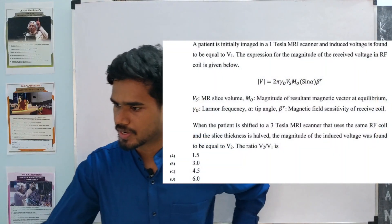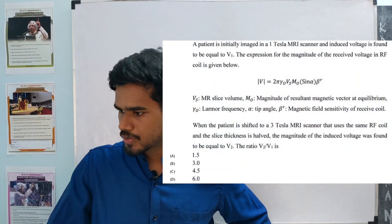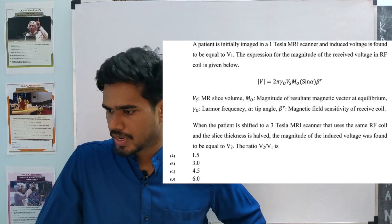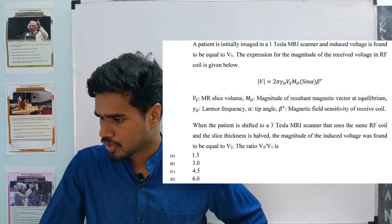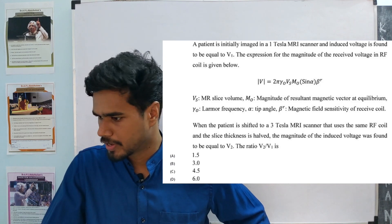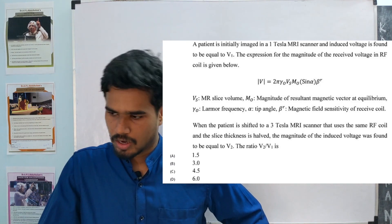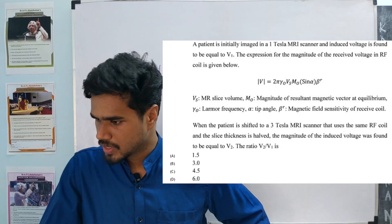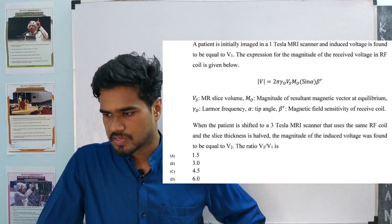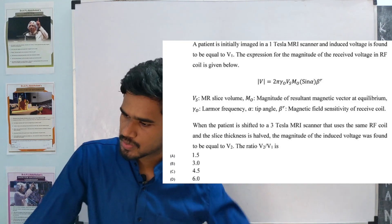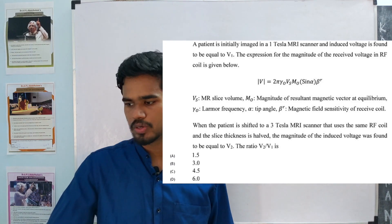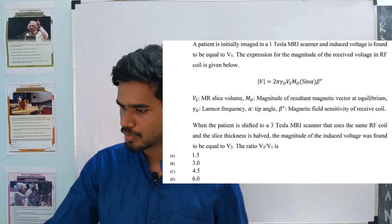A patient is initially imaged in a 1 tesla MRI scanner and the induced voltage is found to be V1. The expression for the magnitude of the received voltage in the RF coil depends on MR slice volume Vs, M0 (the magnitude of the resultant magnetic vector at equilibrium), gamma_0 (the Larmor frequency), alpha (the tip angle), beta_R (the magnetic field sensitivity of the received coil). The patient is then shifted to a 3 tesla MRI scanner using the same RF coil, and the slice thickness is halved. The induced voltage is V2. We need to find the ratio V2 to V1.